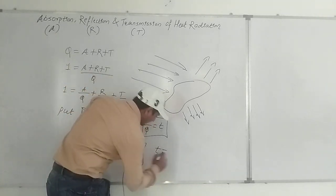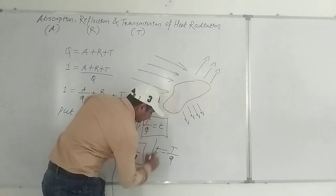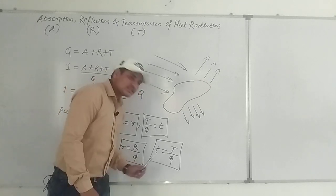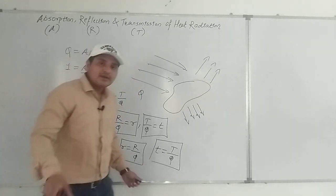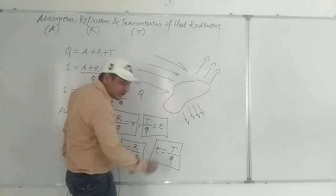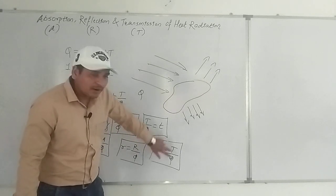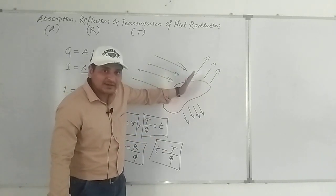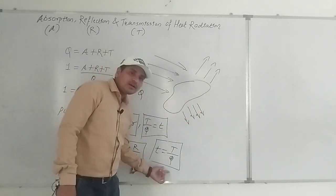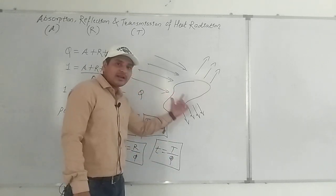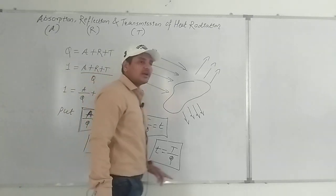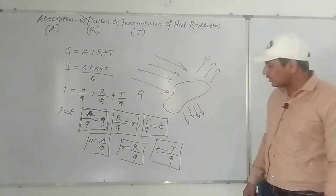Small t is the coefficient of transmission, or transmittance. It is capital T divided by Q. It is the ratio of the amount of thermal energy transmitted by the body at a certain time to the total amount of thermal energy incident on the body at the same time. That is called transmittance.